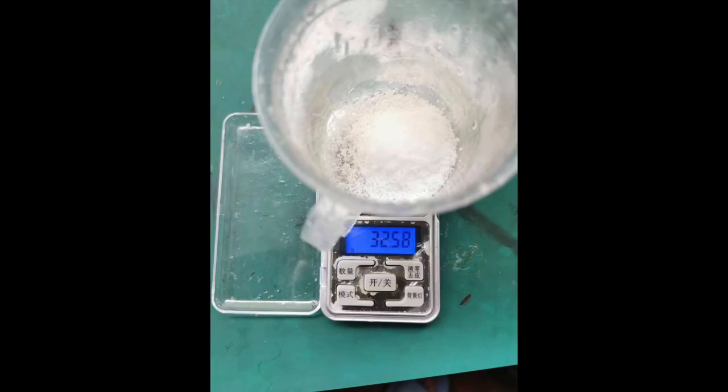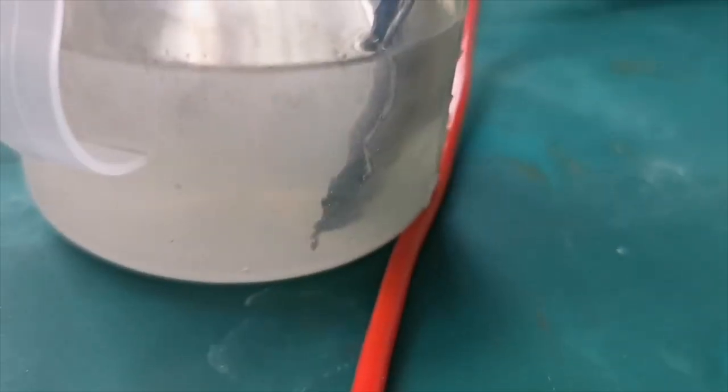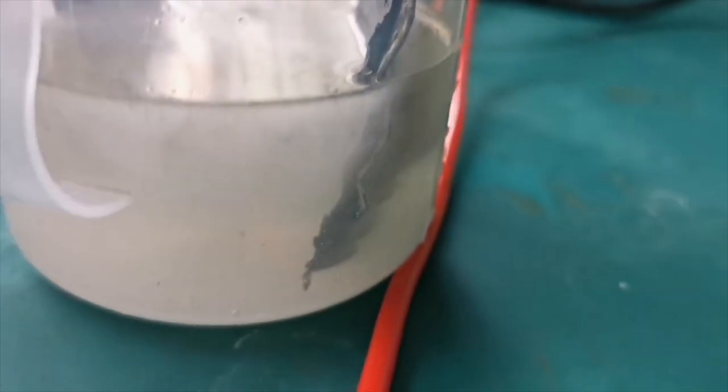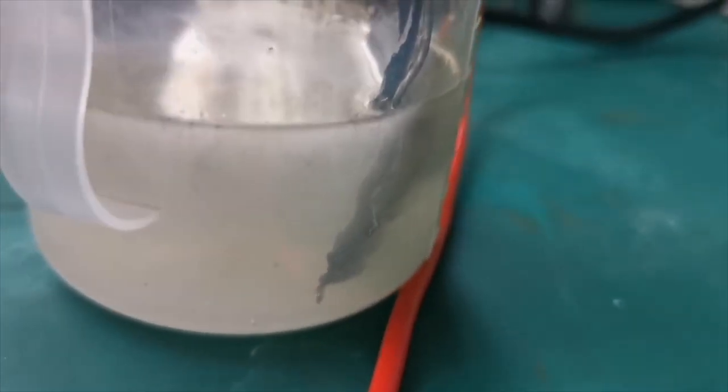Our electrolyte is going to be a solution of sodium hydroxide. I measured out about 32 grams of sodium hydroxide and dissolved it in about 100 milliliters of water. The exact quantity doesn't need to be exact, but we want the concentration of the sodium hydroxide solution to be at least 20%.